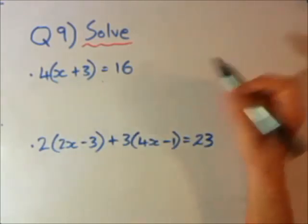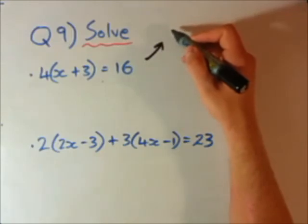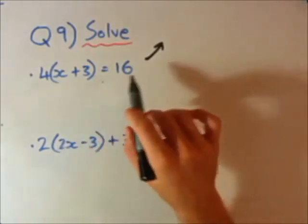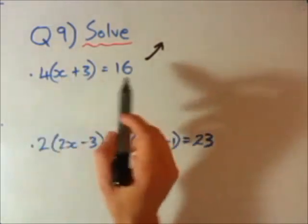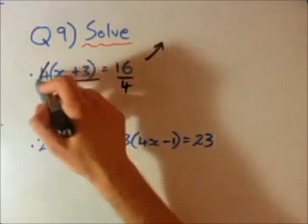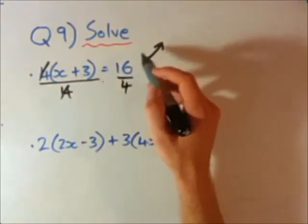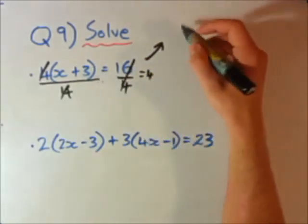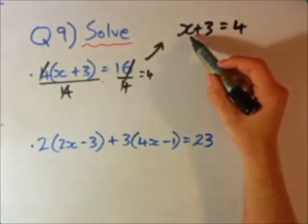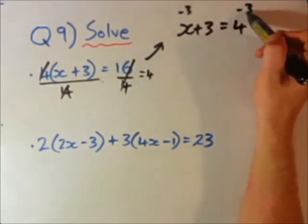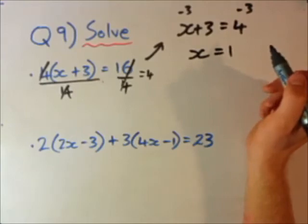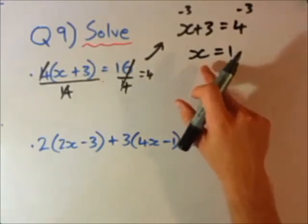We're going to divide both the left hand side and the right hand side by 4. You can do whatever you want to one side as long as you do it to the other. The 4's cancel on the left, and 16 divided by 4 is 4. So we get x plus 3 equals 4. Now I want x by itself, so I subtract 3 from both sides. x plus 3 minus 3 is just x, and 4 minus 3 is 1. So x equals 1.